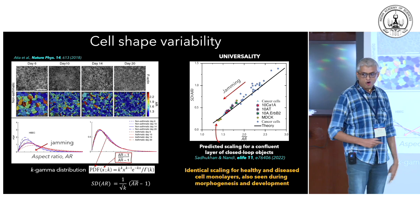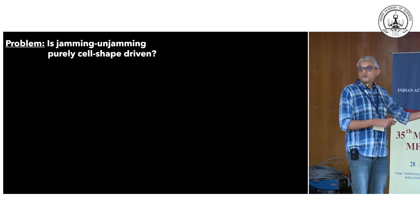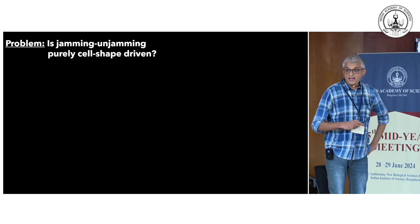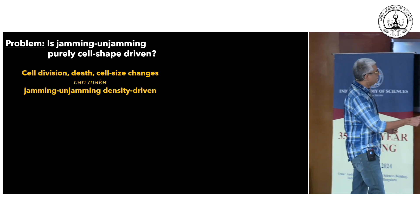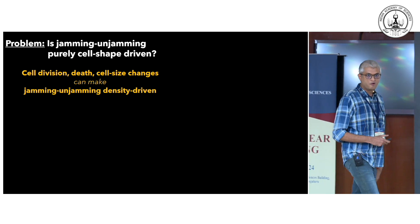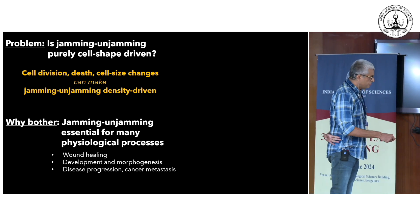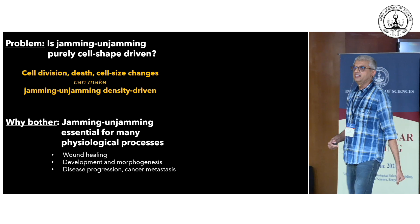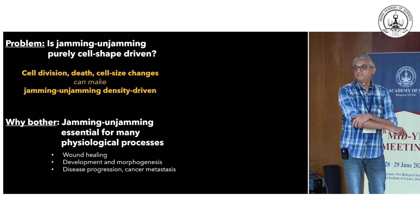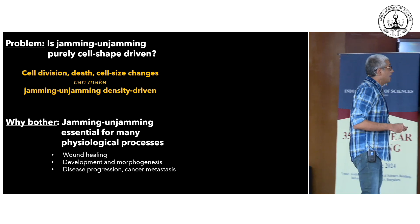This is what was known a few years ago. But the problem we wish to address now is: is this jamming and unjamming purely cell-shape-driven, as the model suggests? The answer is not obvious, because in a real cell experiment, you have division, death, and cell size changes — all of which cause density changes — so jamming could also be density-driven. We need to understand this because it's essential for physiological processes from wound healing to disease progression. We want a completely synthetic model that doesn't suffer from these difficulties.